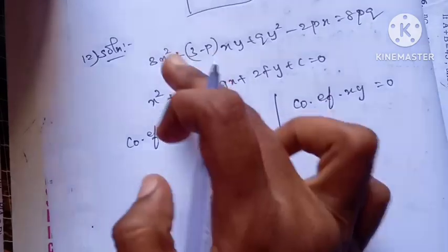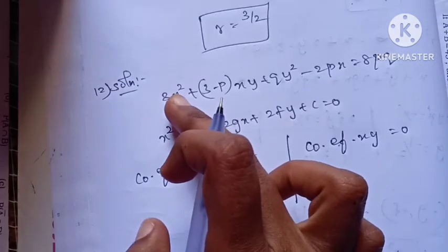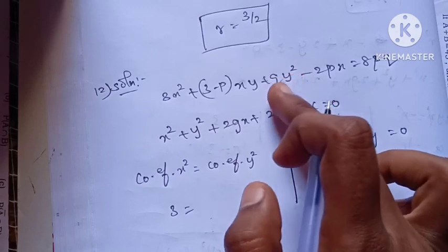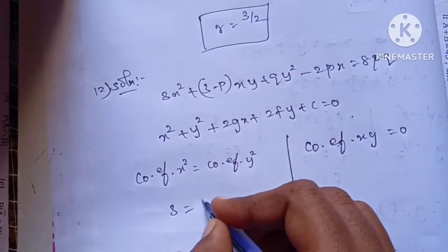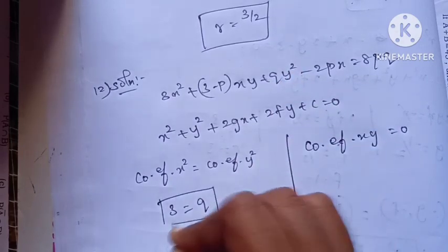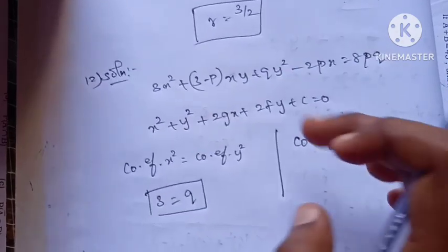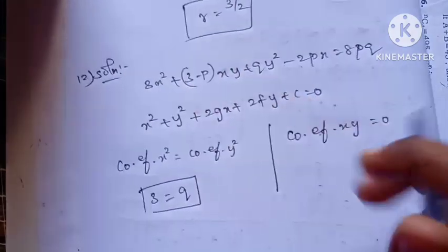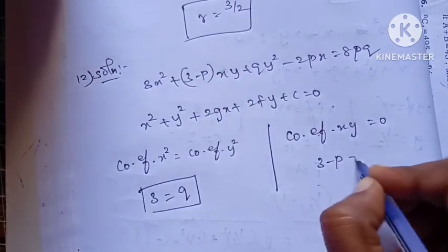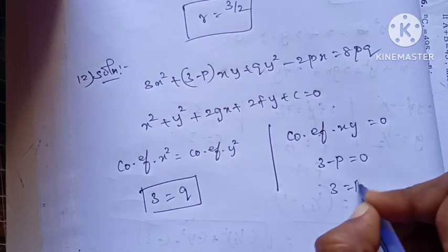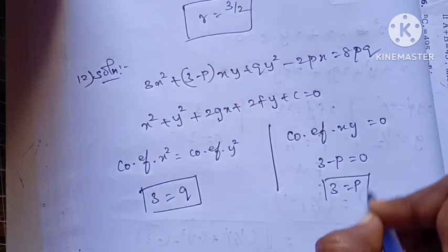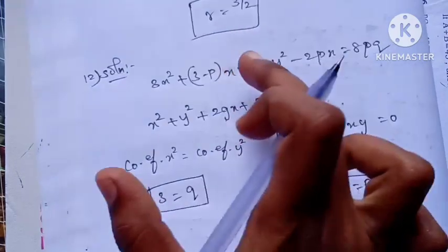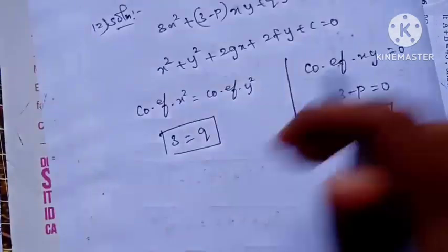So this is the condition. The coefficient of x² is 3, and the coefficient of y² is q, so q = 3. The coefficient of xy is (3-p), and setting it equal to 0 gives 3 = p. So p = 3 and q = 3.